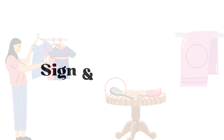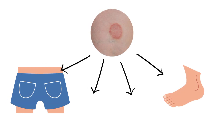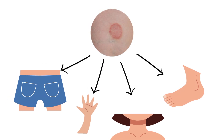Signs and symptoms include a scaly, ring-shaped area, typically on the buttocks, trunk, arms, and legs, along with itchiness. Its color ranges from red on white skin to reddish, purplish, brown, or gray on black and brown skin.